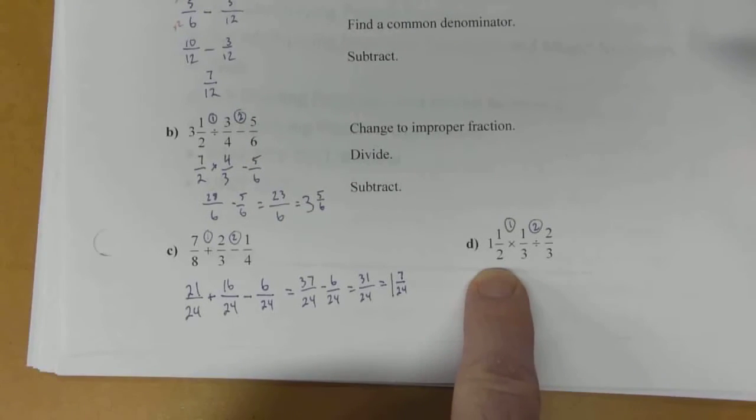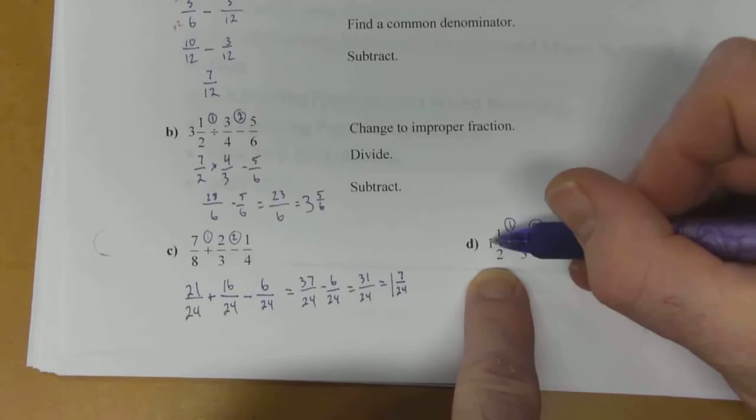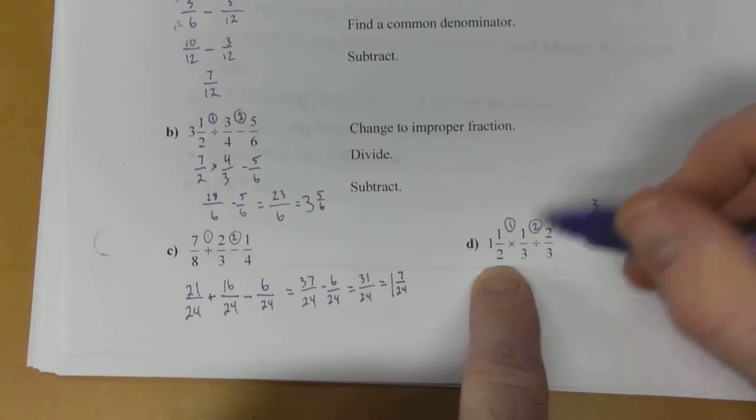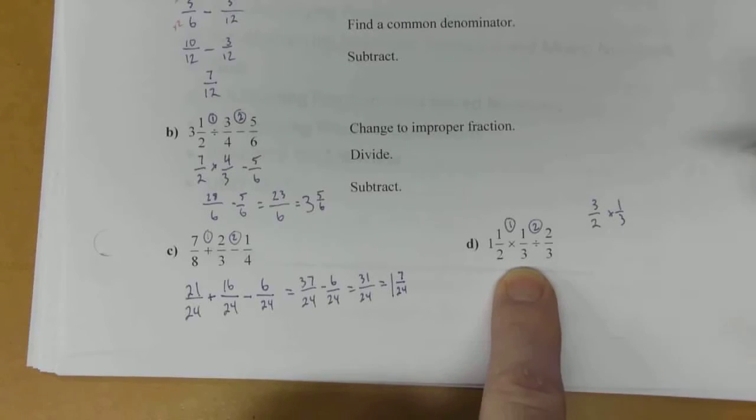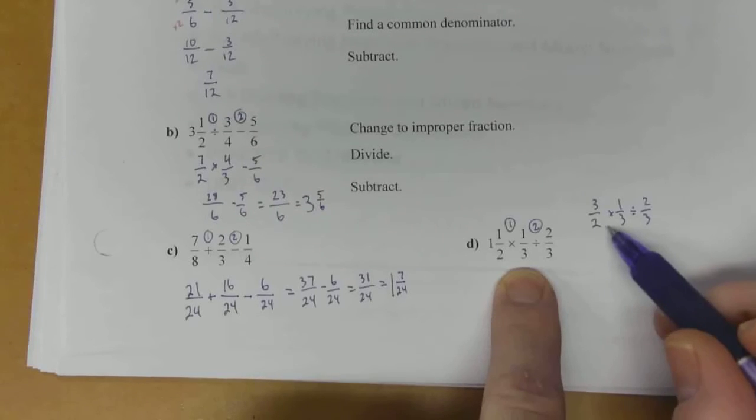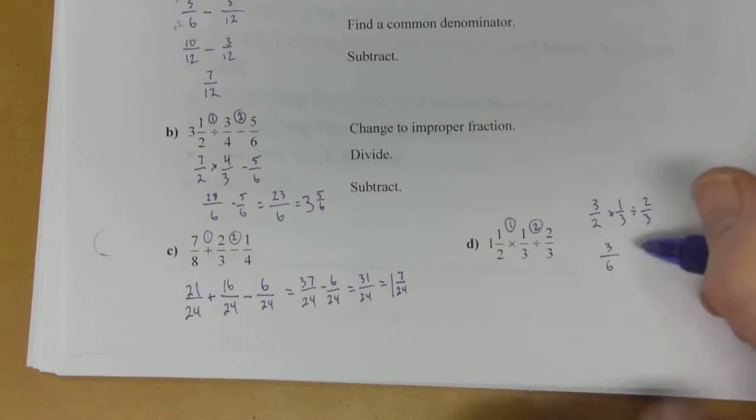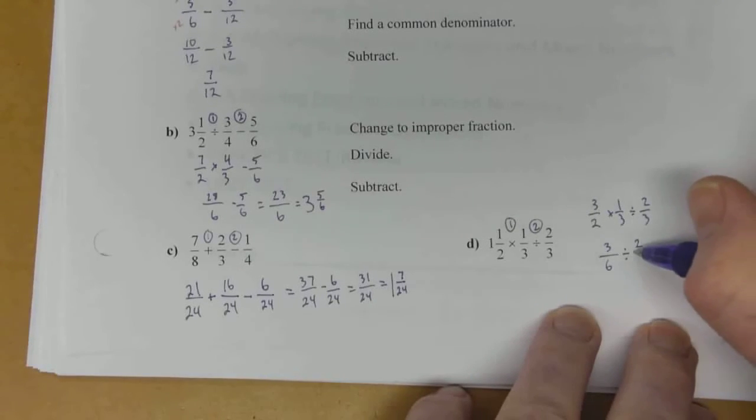I'm going to convert my mixed number into an improper fraction first. 2 times 1 is 2. 2 plus 1 is 3. So that becomes 3 halves. Times 1 over 3. And then divide by 2 thirds. So multiplying gets done first. 3 times 1 is 3. 2 times 3 is 6.